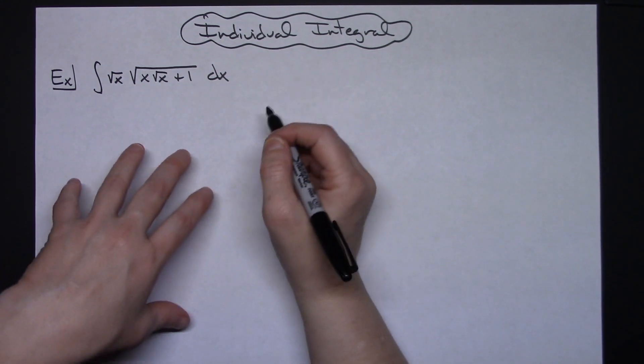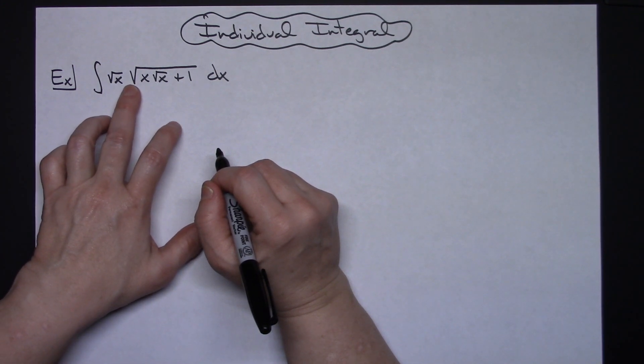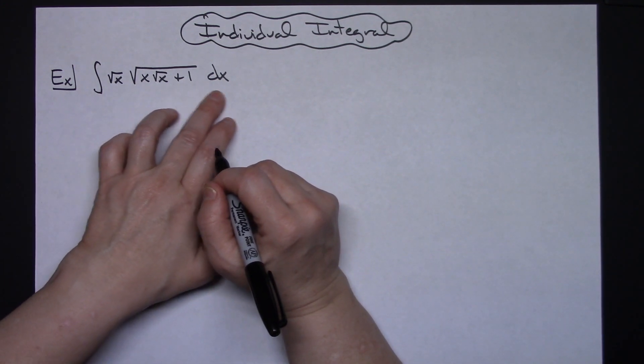In this video I'm going to take a look at an individual integral. It's going to be the integral of the square root of x times the square root of x times the square root of x plus 1 dx.